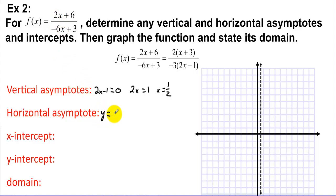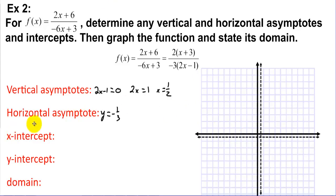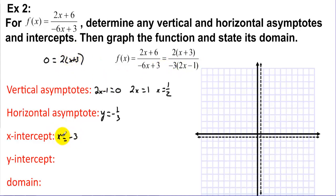The horizontal asymptote compares the powers on top and bottom — they're the same degree, so y = -1/3 (ratio of leading coefficients). For x-intercepts, set the numerator to zero: x + 3 = 0, so x = -3. For the y-intercept, plug 0 in for x and get y = 2.